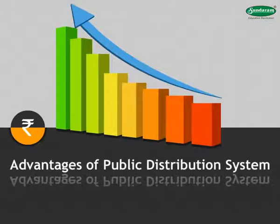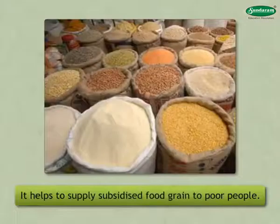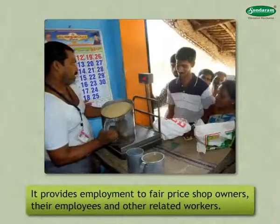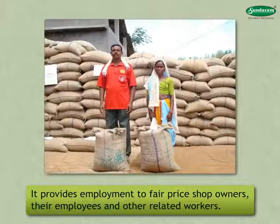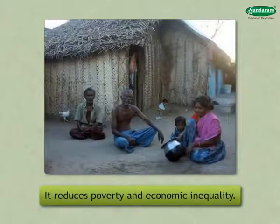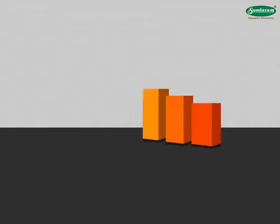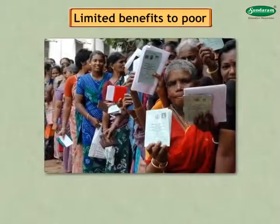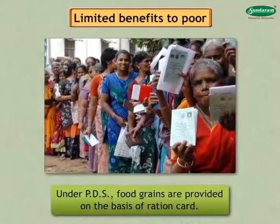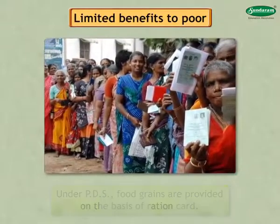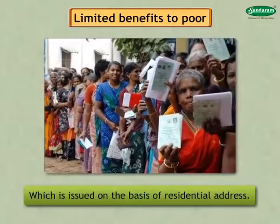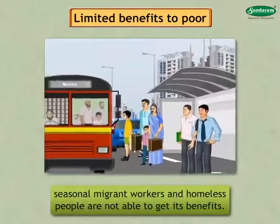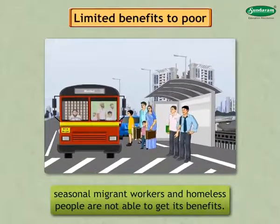The advantages of the public distribution system are: it helps to supply subsidized food grain to poor people; it provides employment to fair price shop owners, their employees and other related workers; and it reduces poverty and economic inequality. A key drawback is limited benefits to the poor — under PDS, food grains are provided on the basis of ration cards issued according to residential address, so seasonal migrant workers and homeless people are not able to get its benefits.